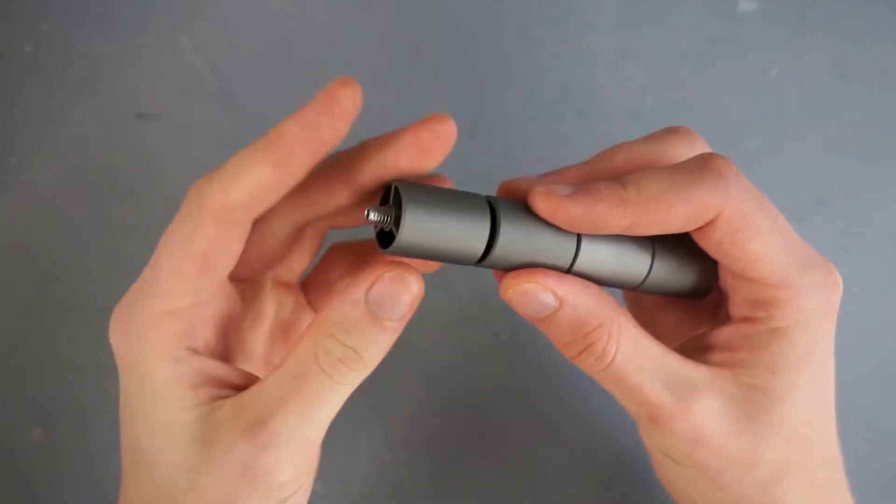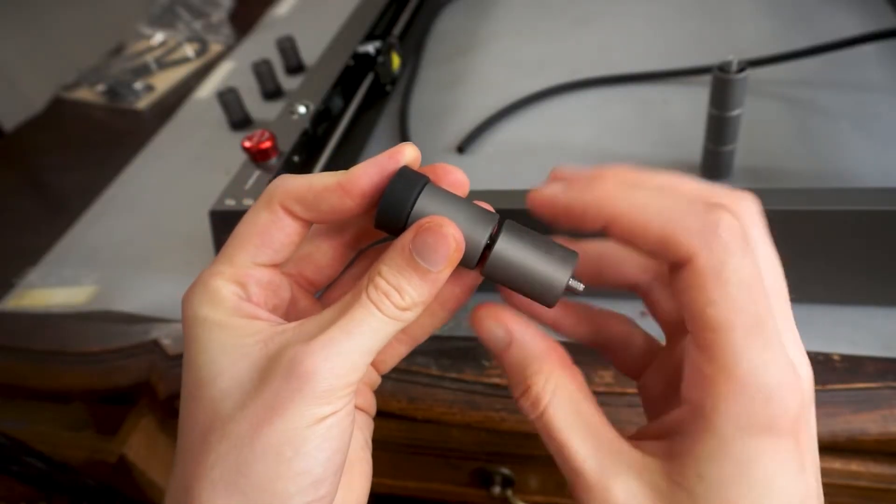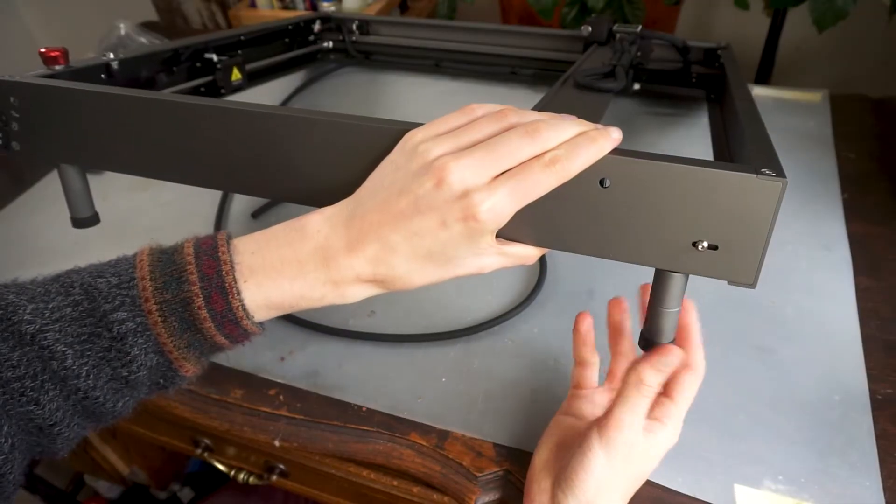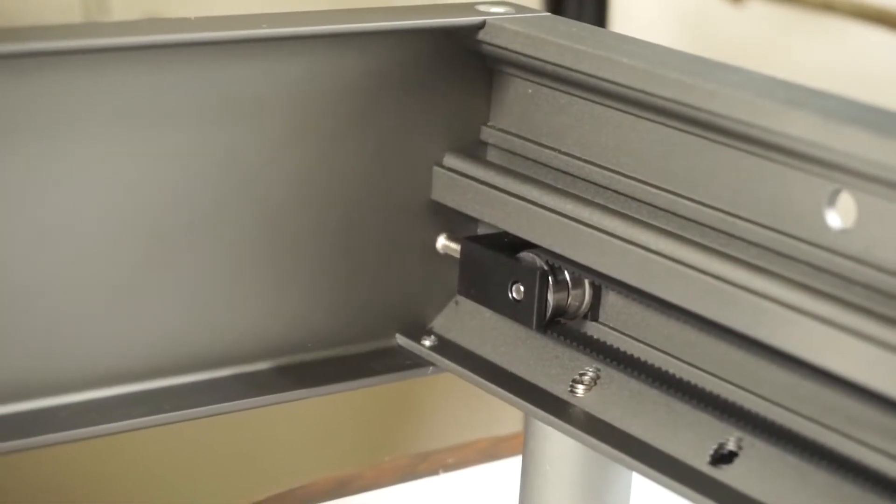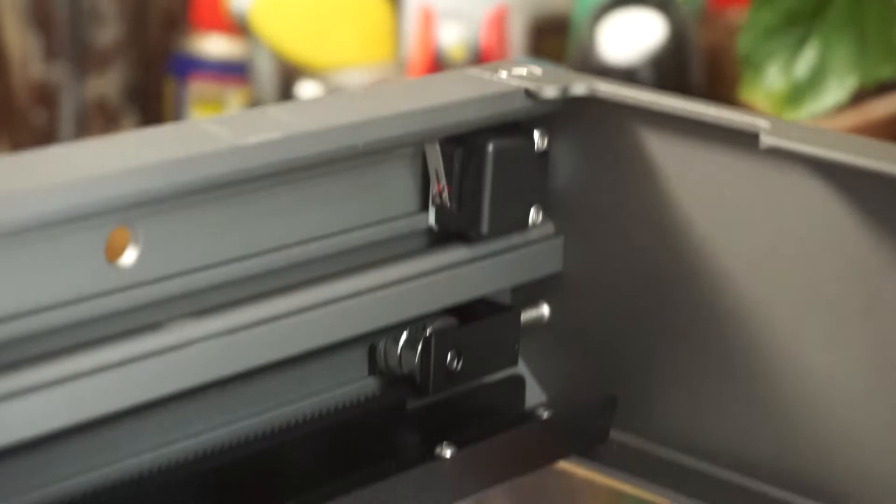To engrave thicker objects, the machine can be raised by adding these 4 extension tubes to the legs. There are also tensioners at the back and the middle of the machine, allowing you to easily tighten the belts if necessary.